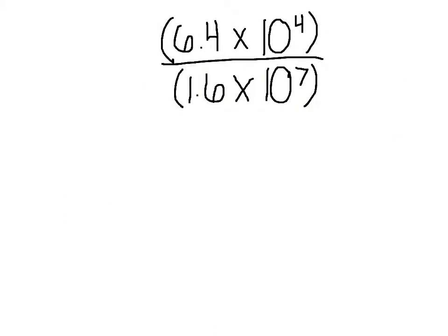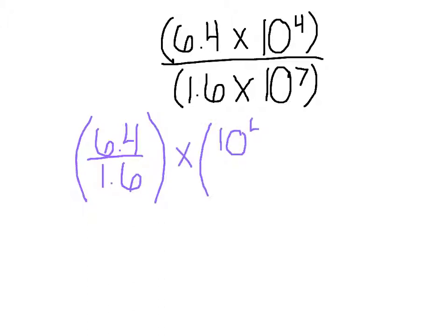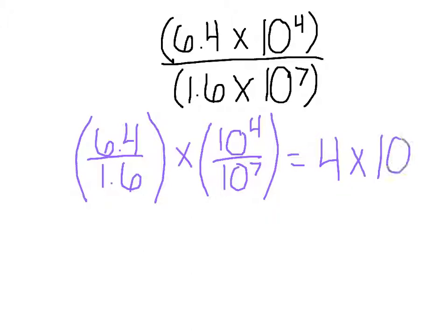We're going to do the same thing when we divide. I'm going to group my numbers together and group my powers of 10 together. So 6.4 divided by 1.6 is 4, times 10 to the 4th divided by 10 to the 7th. They have the same base, so I'm going to keep the base. And because we're dividing, I'm going to subtract the exponents. 4 minus 7 is negative 3. Is this in proper scientific notation?